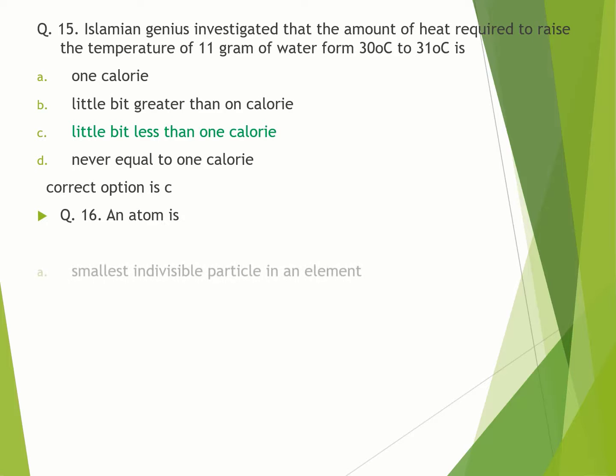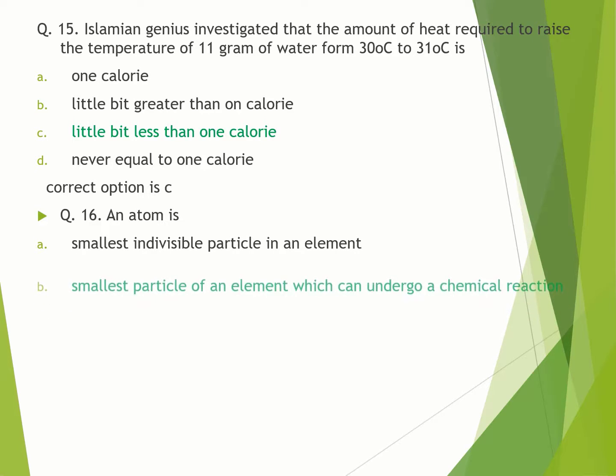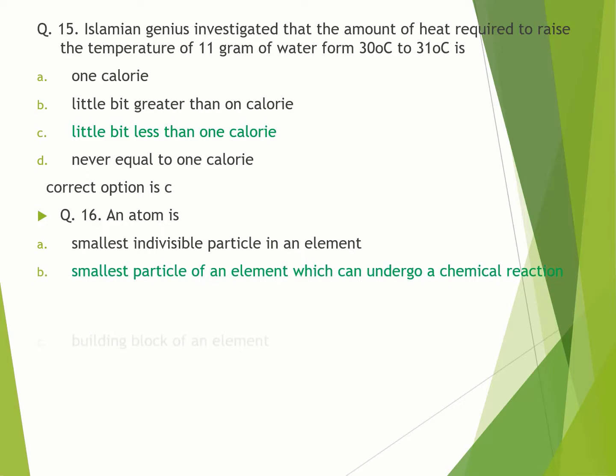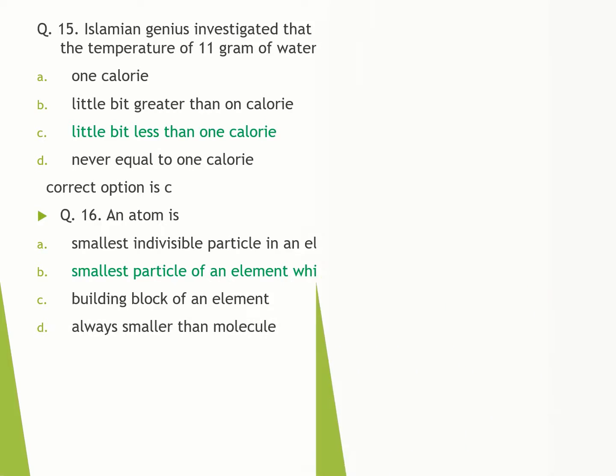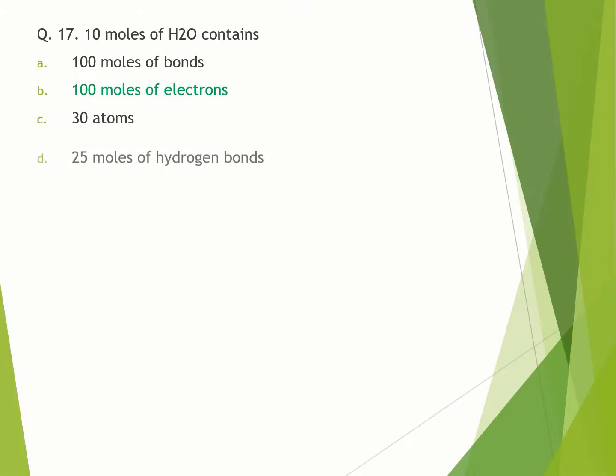Question number 16. An atom is: A. smallest indivisible particle in an element. B. smallest particle of an element which can undergo a chemical reaction. C. building block of an element. D. always smaller than molecule. Question number 17. 10 moles of H2O contains: A. 100 moles of bonds. B. 100 moles of electrons. C. 30 atoms. D. 25 moles of hydrogen bonds. Correct option is B.